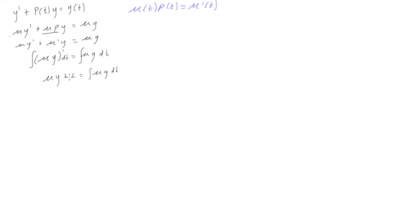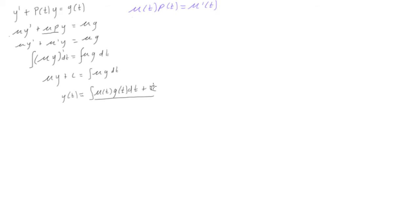The general solution requires us to solve for y. We'll bring the integration constant over. So we get the integral of mu(t) times g(t) dt plus c, all divided by mu(t). It doesn't matter that it stayed the same sign — if we subtract an arbitrary constant from both sides, it's still an arbitrary constant. So we divide both sides by mu of t, giving y(t). That's actually the general solution for a first-order linear differential equation.